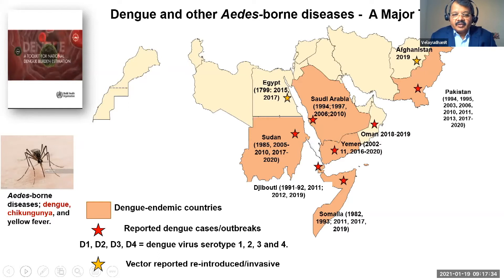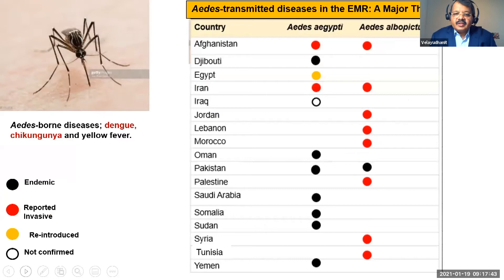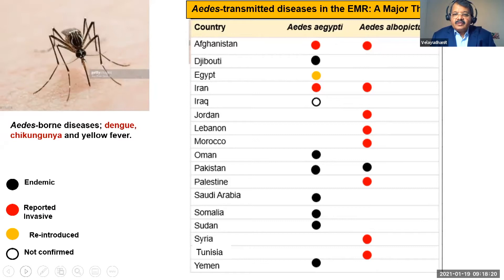To make matters worse, chikungunya is also circulating in some countries. The distribution map shows Aedes and Aedes albopictus in the Eastern Mediterranean region; most countries have one or the other. Aedes albopictus has been reported in several countries that have not yet reported dengue. Afghanistan is our newest entrant, reporting its first dengue outbreak in 2019 — becoming the 129th country in the world to report dengue.